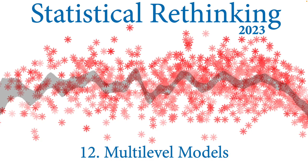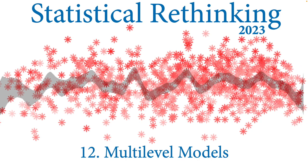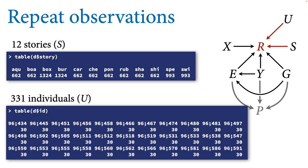Welcome to lecture 12 of Statistical Rethinking 2023. In this lecture I'm going to reveal that I've been leaving some information on the table for all the previous lectures. Last lecture I ended with the point that there are a couple of important variables causing a lot of variation in the trolley moral judgment data. The stories themselves are 12 different ones and participants tend to have different reactions to the details, and there are 331 individuals who participated, each contributing only 30 responses, with very different response tendencies unexplained by other things we know about them.